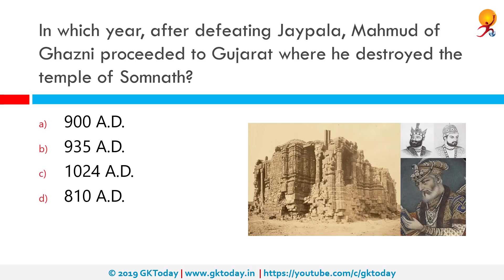In which year, after defeating Jaipal, did Muhammad of Ghazni proceed to Gujarat where he destroyed the temple of Somnath? The correct answer is 1024 AD. In 1024, during the reign of Bhim I, the prominent Turkic ruler Muhammad of Ghazni raided Gujarat, plundering the Somnath temple and breaking its Jyotilinga despite pleas by Brahmins not to break it. He took away a loot of 20 million dinars and later boasted that he had killed 50,000 devotees.